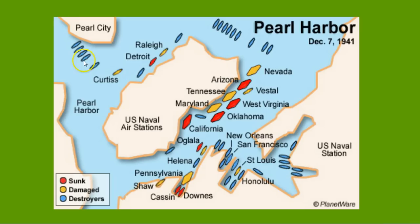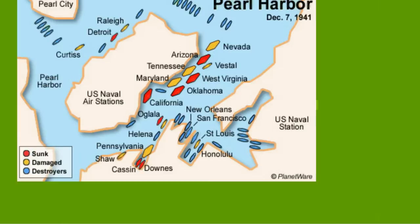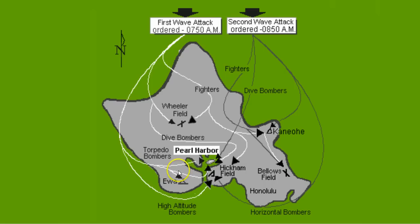Japan had a lot of spies in the country, and they took very specific, detailed photos and sent a lot of information back to Japan in preparation for this attack. They knew what ships were in port and which ships were out. You can see the first wave at 7:50 coming around on the eastern side of the island, hitting Pearl Harbor and other Air Force fields, and then the other wave at 8:50.